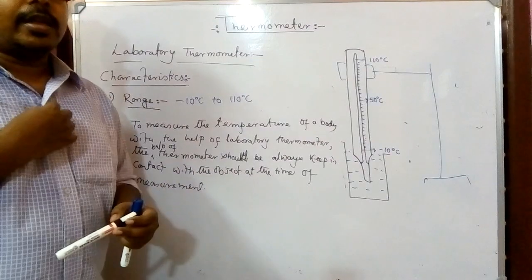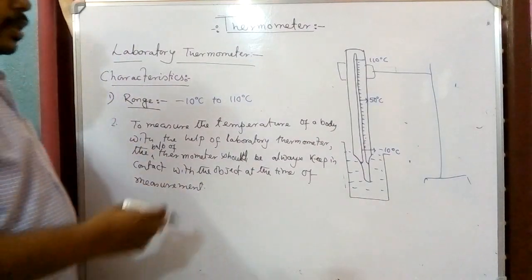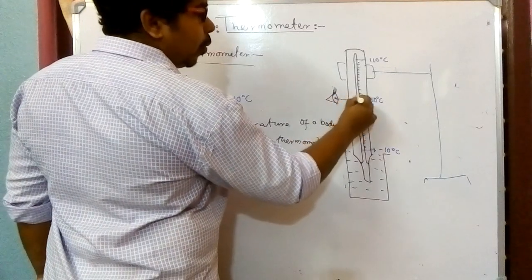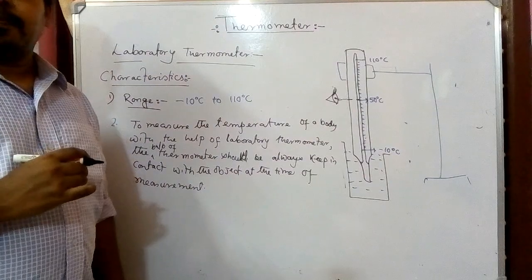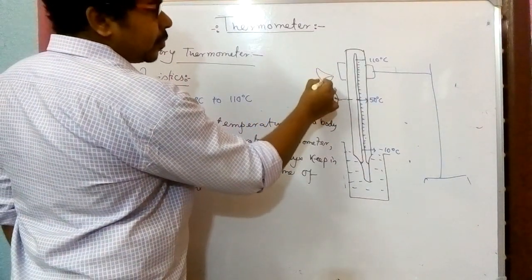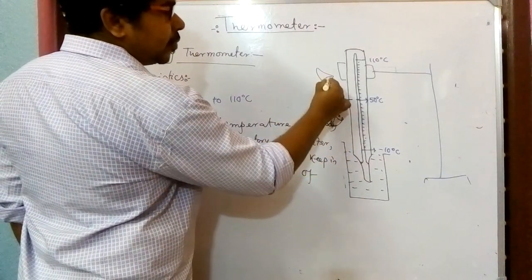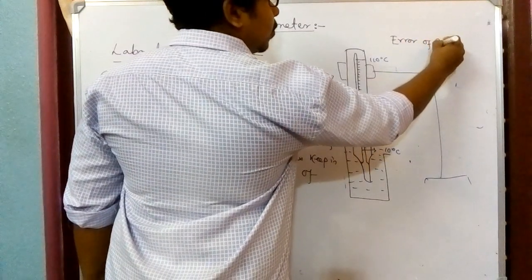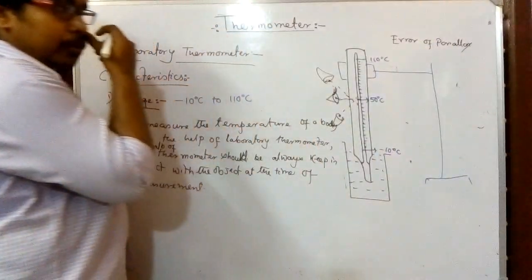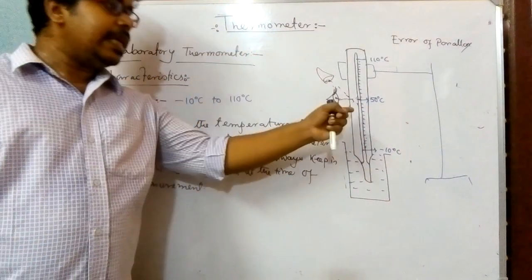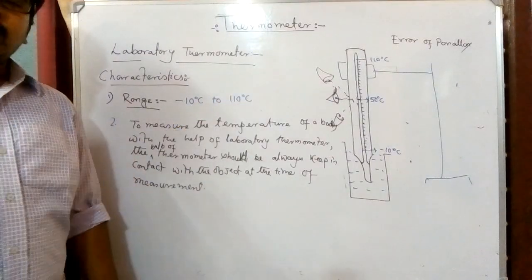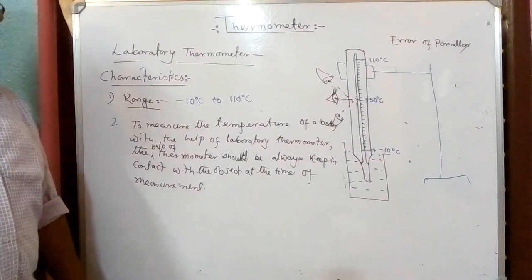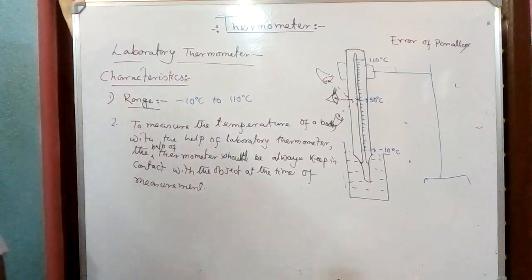One more thing: just as we discussed for measuring length with a scale, when reading the thermometer you must keep your eyes perpendicular to the point where the level of mercury has come. If you keep your eyes above or below that level, there will be an error — that is known as the error of parallax. To get rid of this parallax error, keep your eyes perpendicular to the level of the mercury so that your measurement of temperature will be accurate.